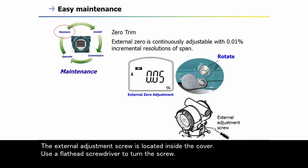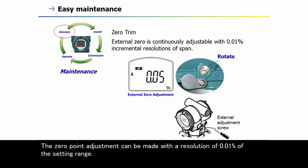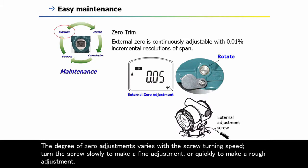The external adjustment screw is located inside the cover. Use a flathead screwdriver to turn the screw. Equalize the transmitter, then turn the screw clockwise to increase the output or counterclockwise to decrease the output. The zero point adjustment can be made with a resolution of 0.01% of the setting range. The degree of zero adjustment varies with the screw turning speed — turn the screw slowly for fine adjustment or quickly for rough adjustment.